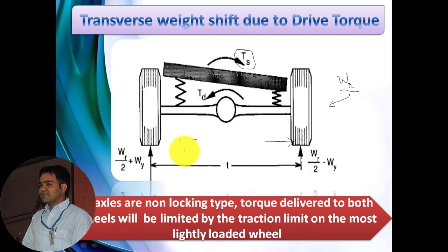One important thing to keep in mind: if the axles are non-locking type, the torque delivered to both wheels will be limited by the traction limit on the most lightly loaded wheel. So let's first estimate the lateral weight shift WY, then use those values to estimate the total load on each wheel, and finally calculate the tractive force. This is the simple flow of this mathematical modeling.